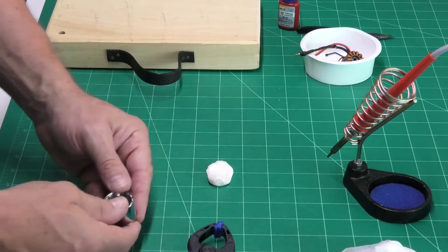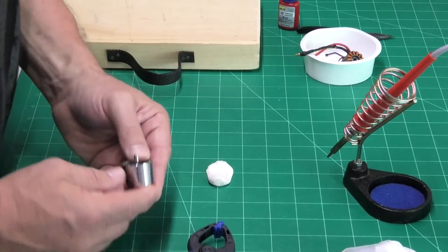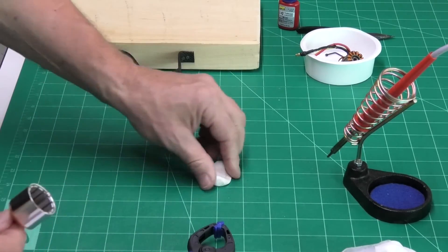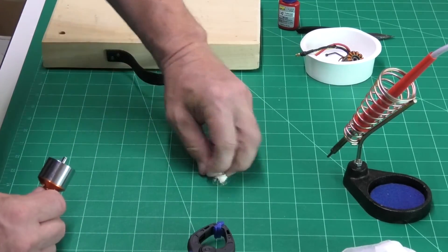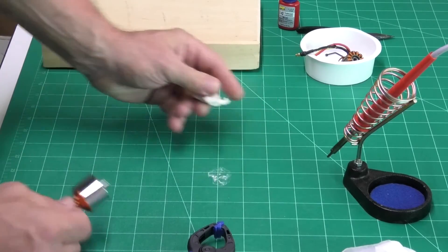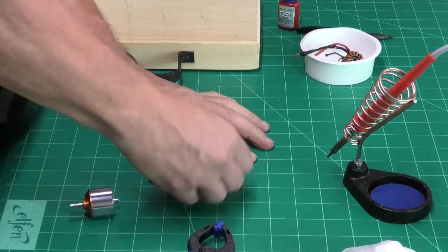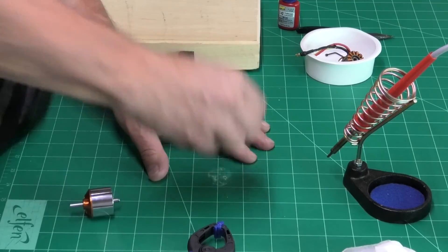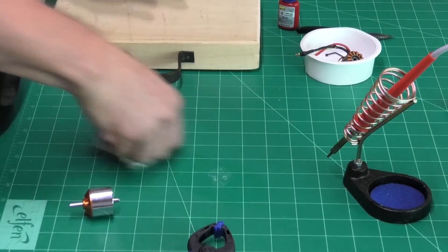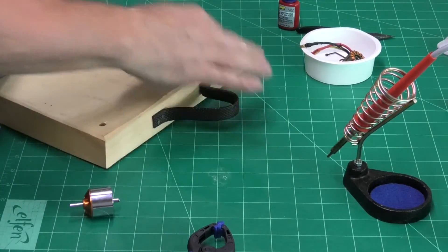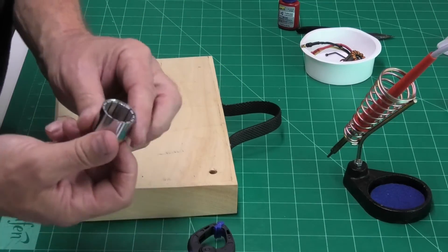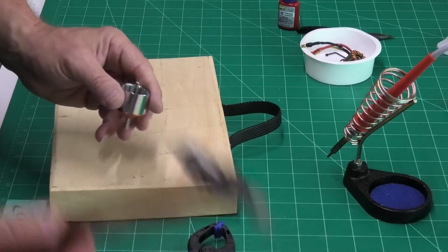Now, the next thing we need to do is get the shaft out. Well, it's not going to push out. It's quite a tight fit on there. So, let's get rid of this blue tape. It seems to have made a mess of my cutting mat. But anyway, there we go.